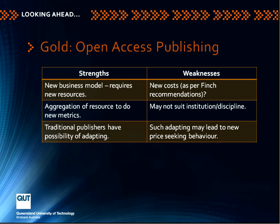In terms of the gold approach, it is a new business model for publishers. It does allow aggregation of resource to do new metrics — there are very interesting things coming from the Public Library of Science and other well-known gold journals. From a publisher point of view, there's the possibility of adapting to this new business model. One weakness about gold is a lot of confusion about how it's to be managed financially. People often confuse gold with the idea that all gold publishing involves article processing fees — that isn't the only example. And we can see new price-seeking behavior as some publishers seek to obtain revenue at the input stage while maintaining subscription income, which has not got much support from the market.